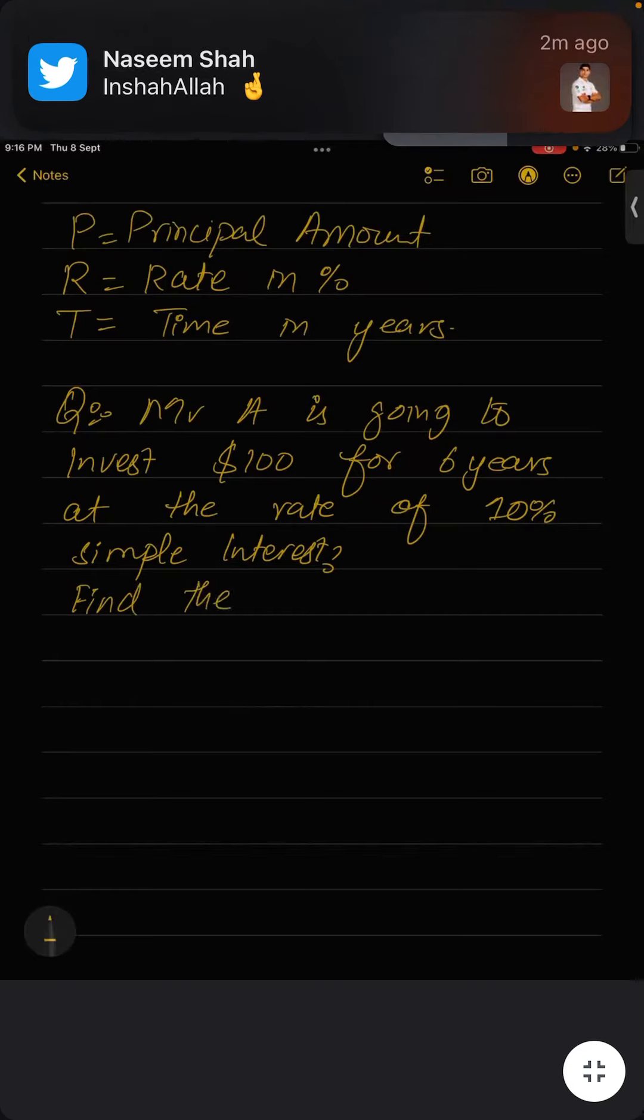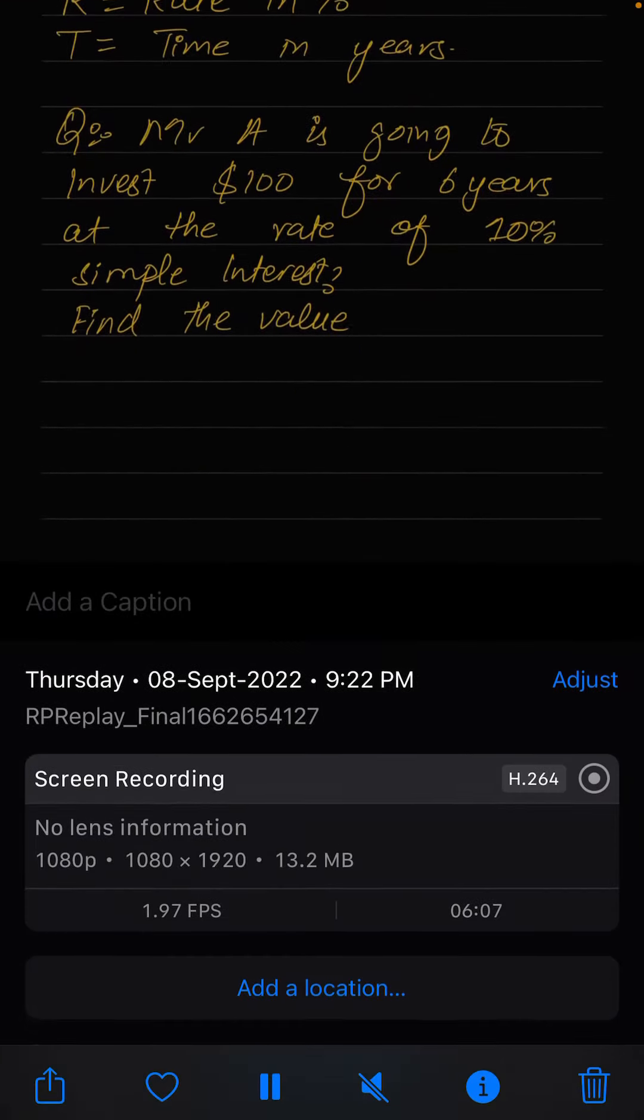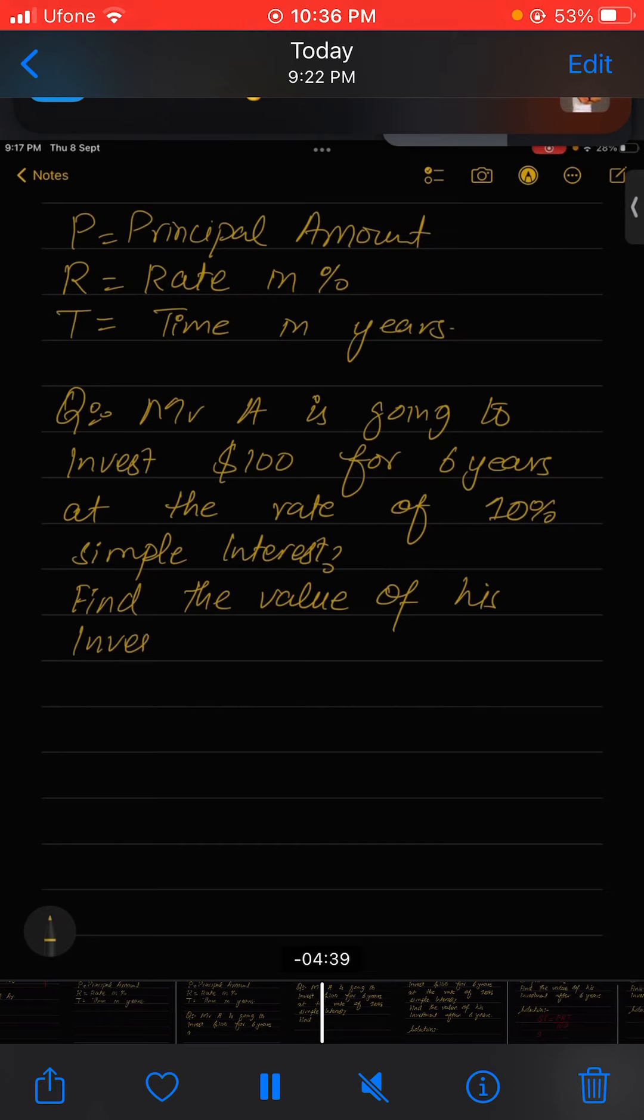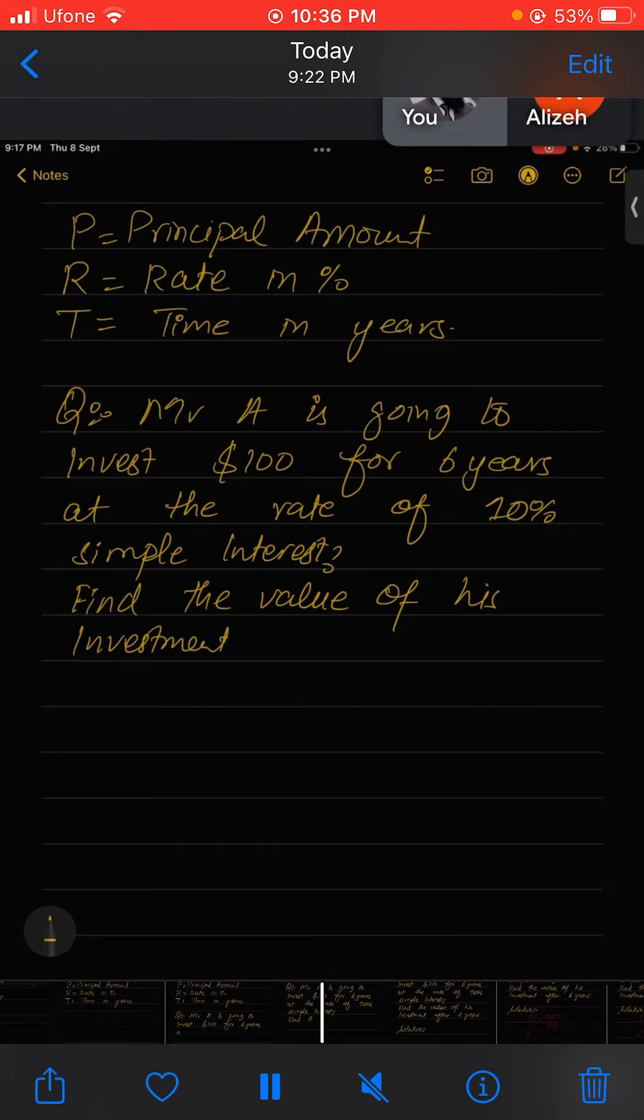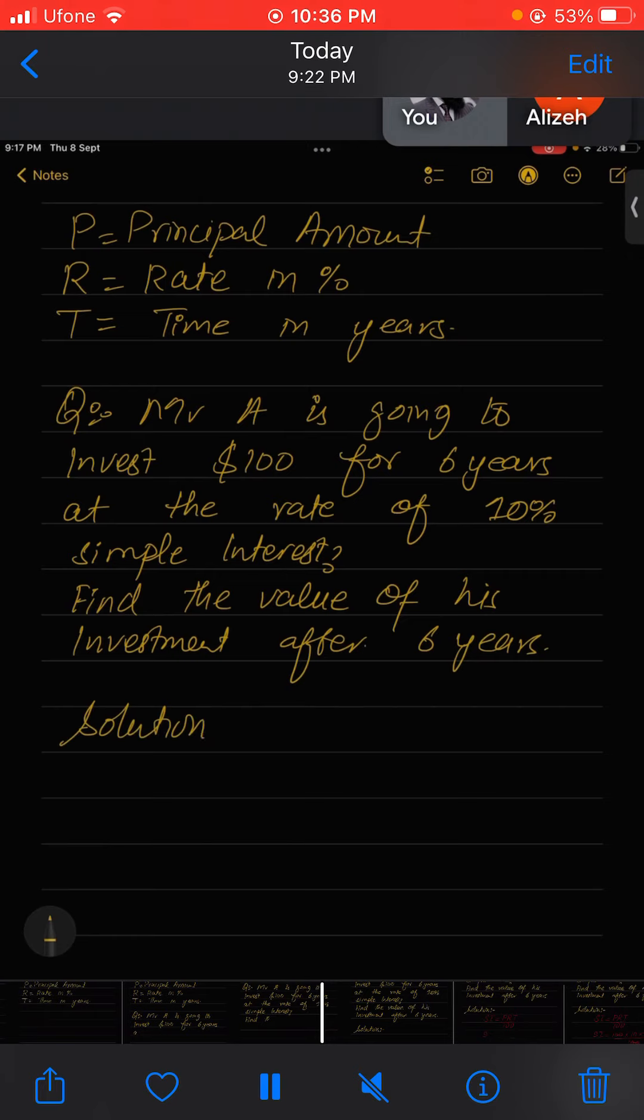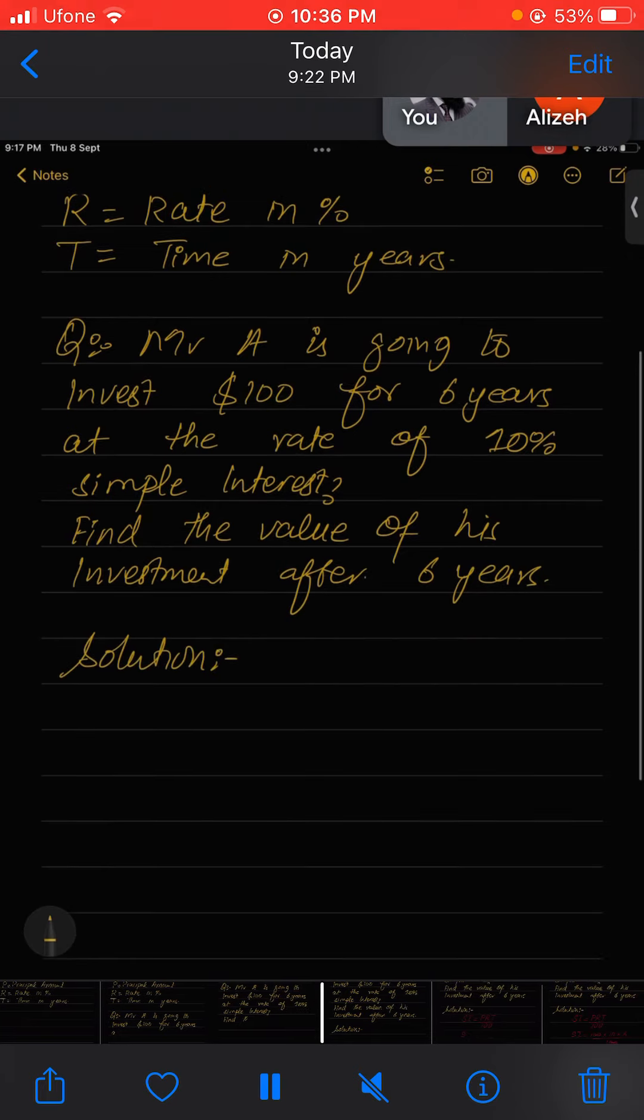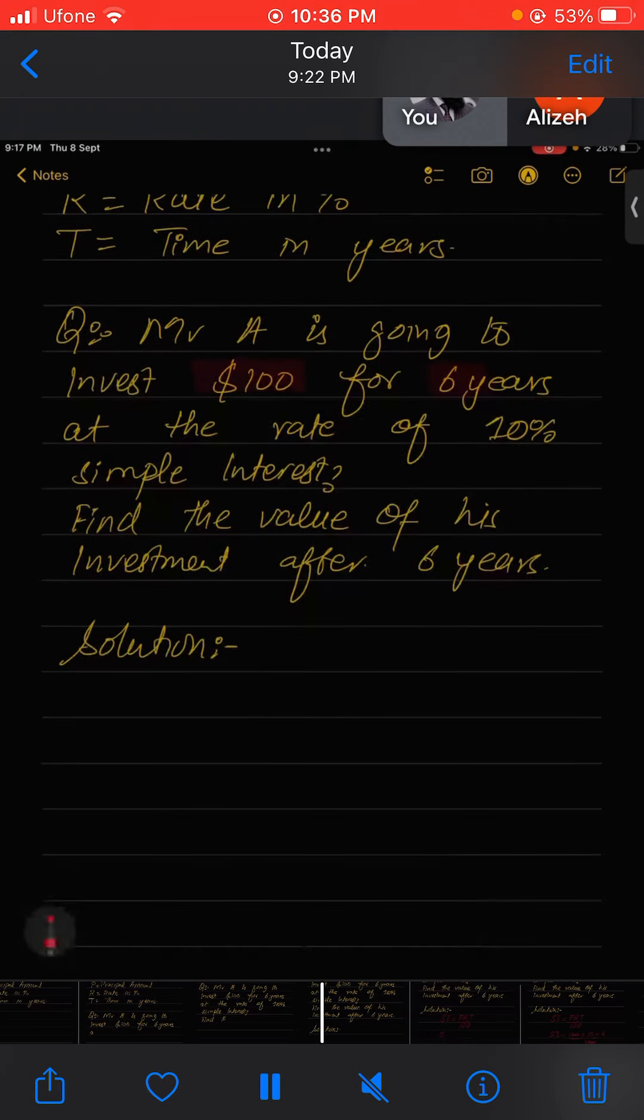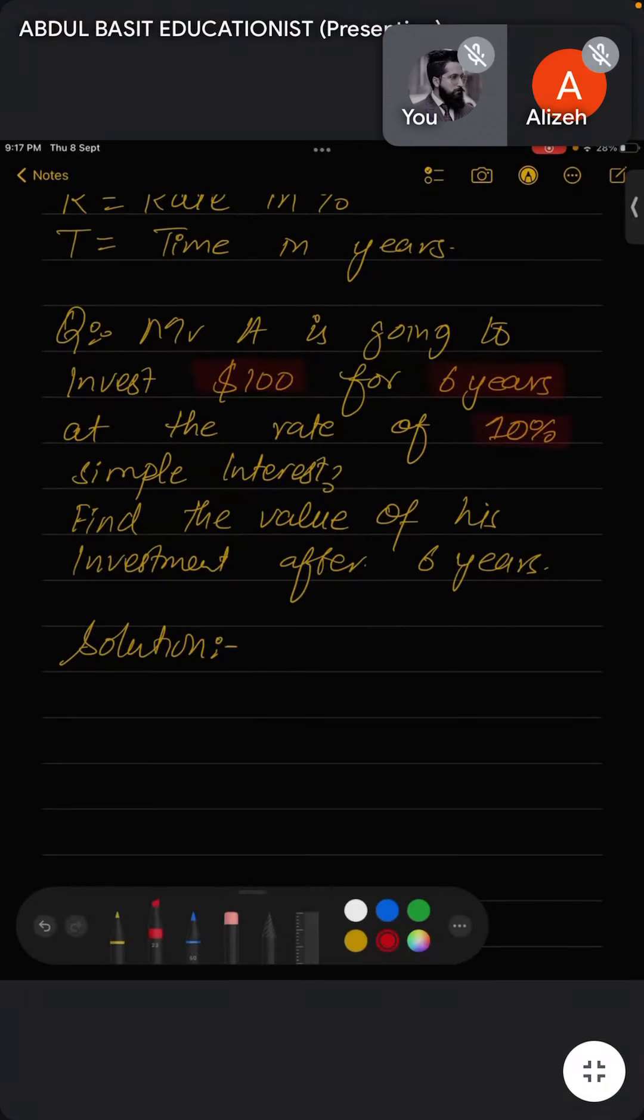So now the question is: find the value of his investment after six years. The solution - we can see that $100 is my principal amount, 6 years is the time, and 10% is my rate, so I'll use the formula of simple interest.